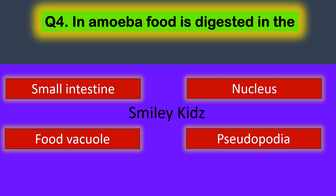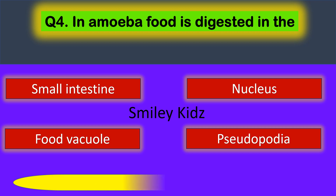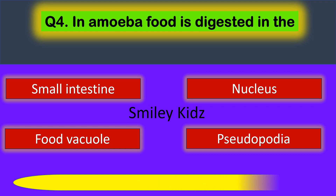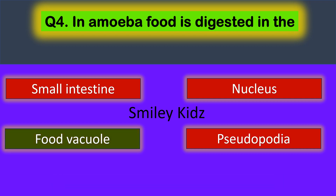Question number four: in amoeba, food is digested in the — your options are: small intestine, nucleus, food vacuole, and pseudopodia. The correct answer is food vacuole. In amoeba, food is digested in the food vacuole.